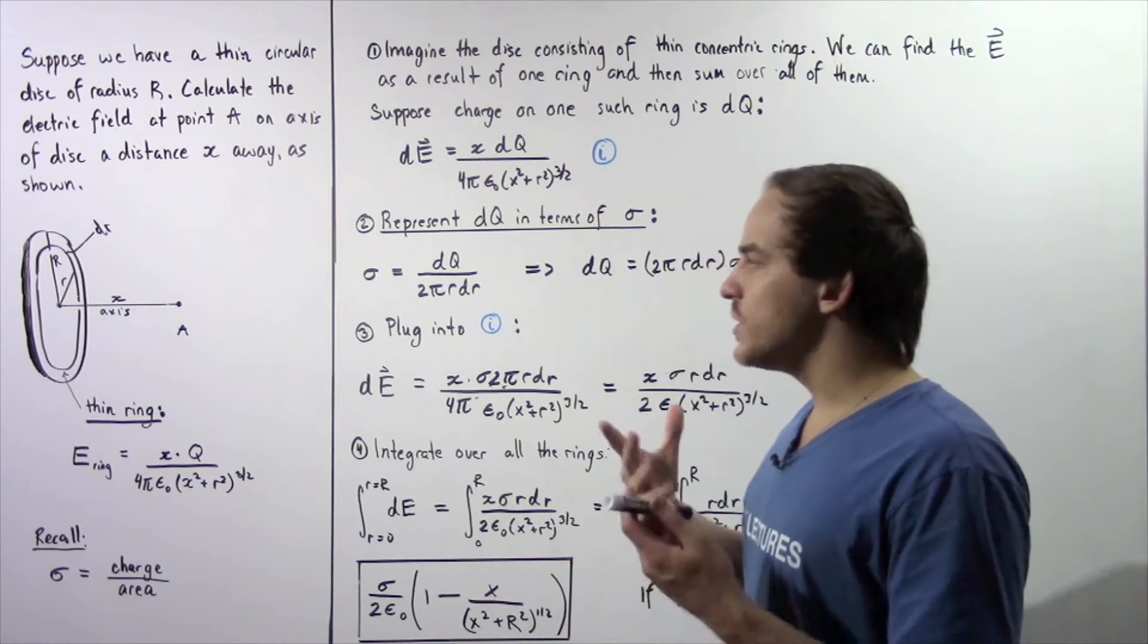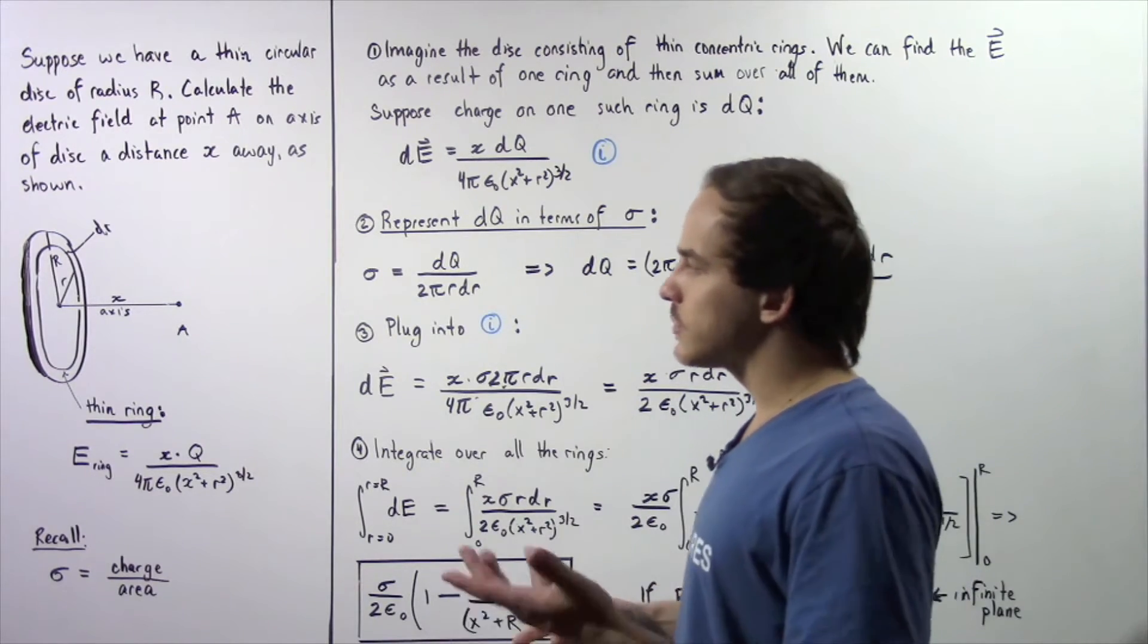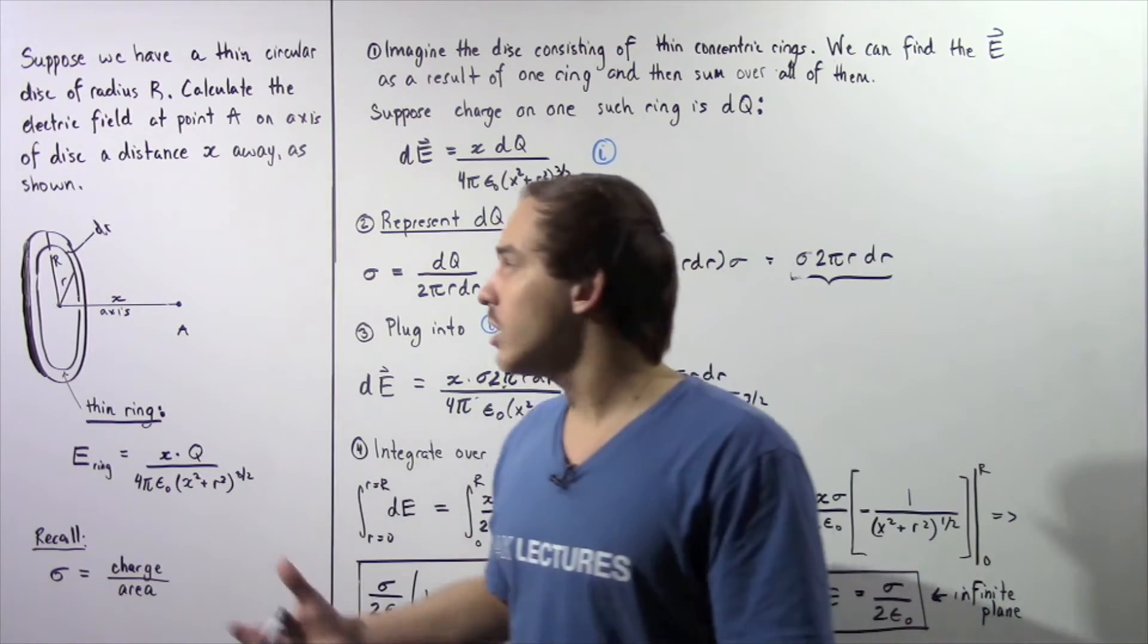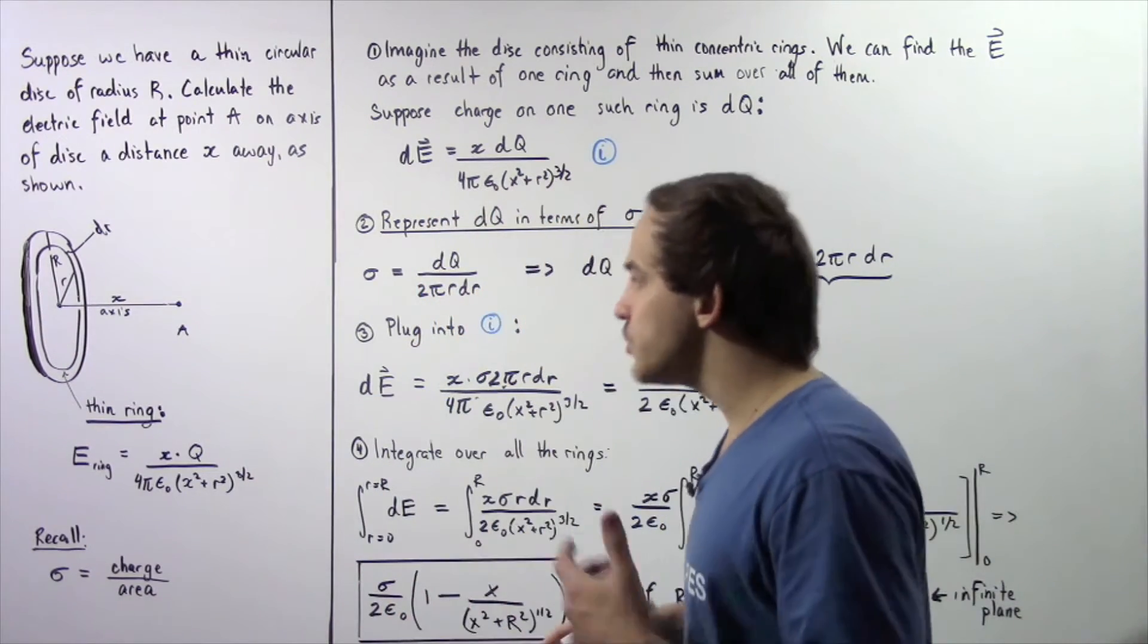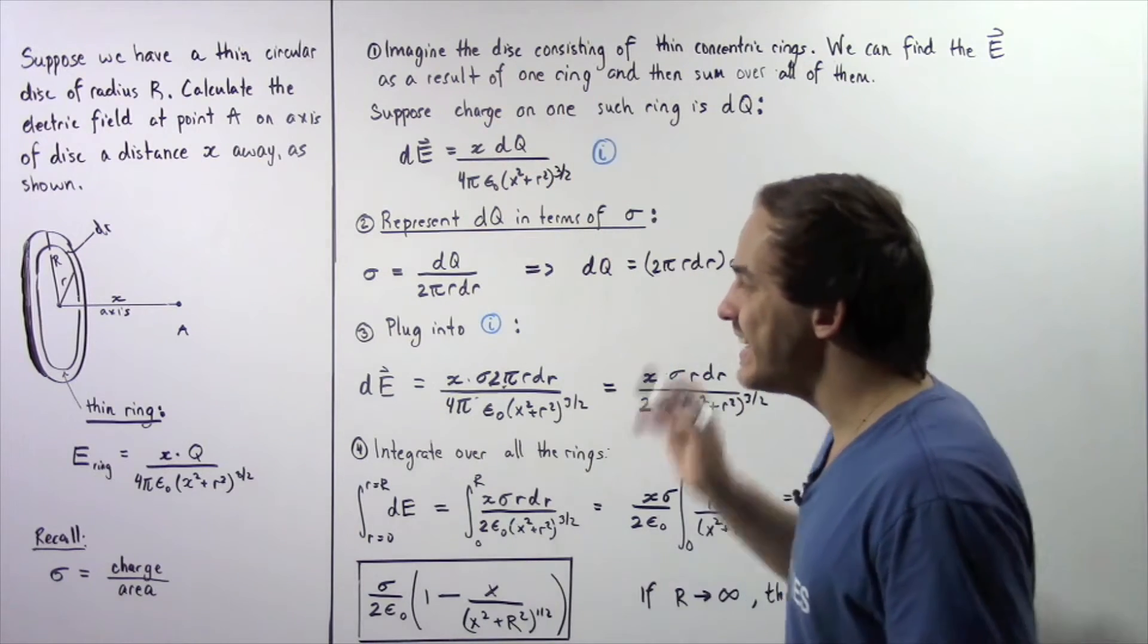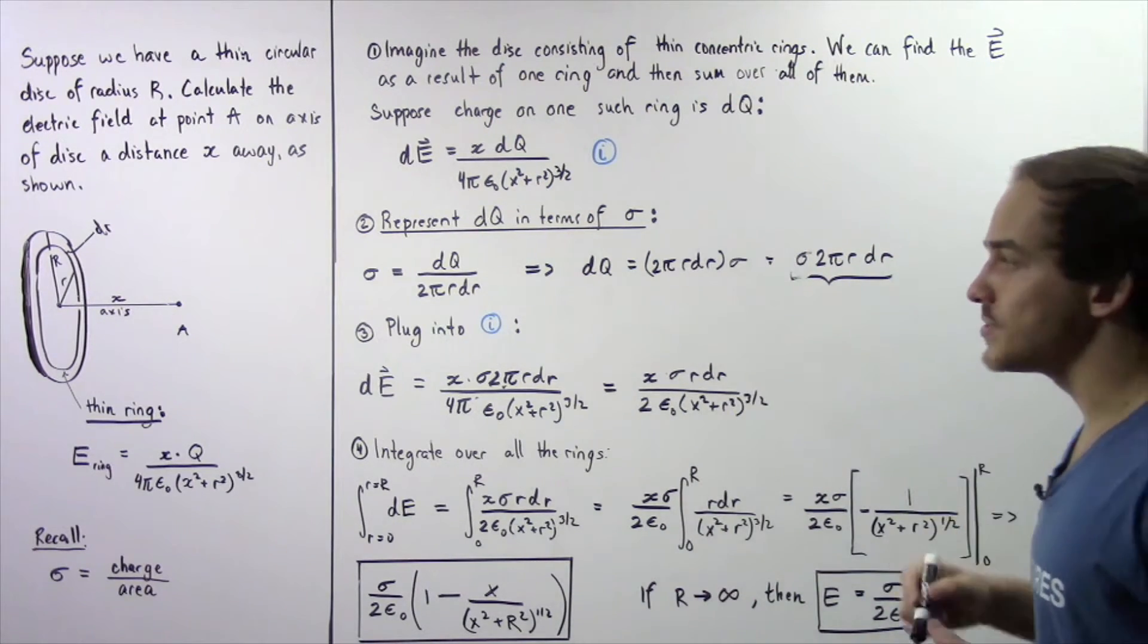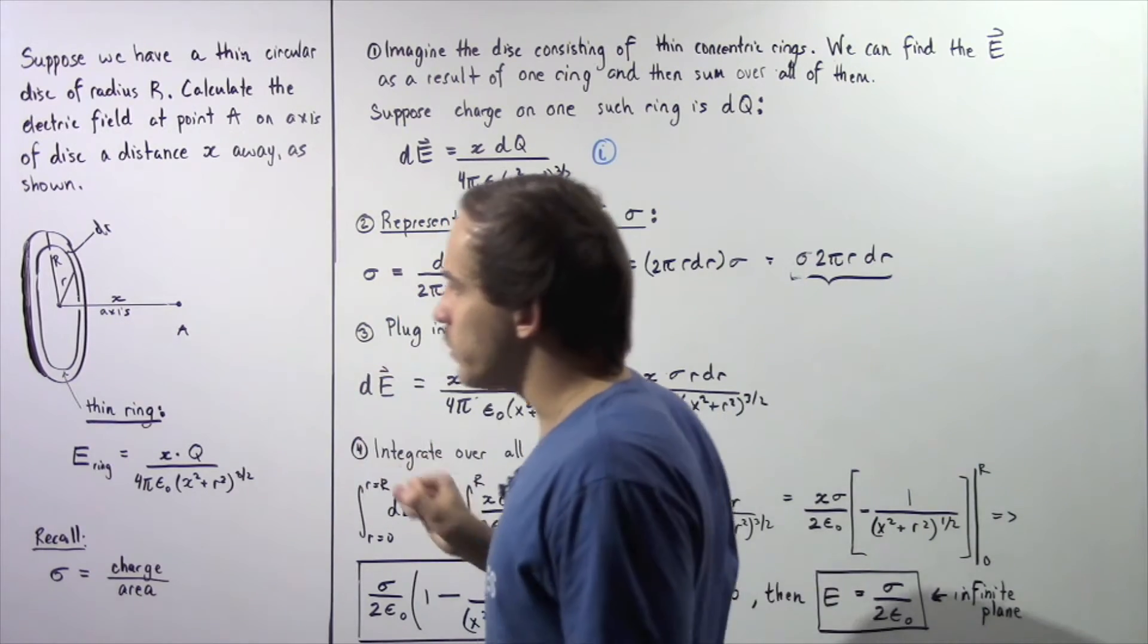So how exactly are we going to calculate the electric field at point A as a result of the continuous charge found on the disk? Well, one way to do it is to imagine the disk consists of many thin concentric rings as shown in the following example.